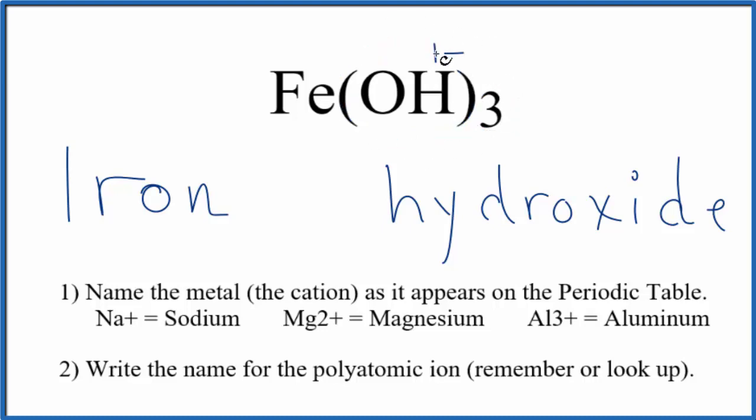So we have a total charge of three times one minus, three minus. The iron has to be three plus for the net charge to be zero. So because of this three plus, this iron three ion, we write a Roman numeral three in parentheses, and the three is for the three plus.